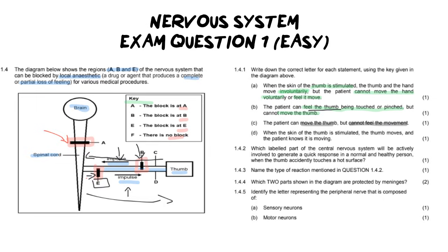Then our final one for this is when the skin of the thumb is stimulated, the thumb is going to move and the patient knows it's moving. I quite like this particular question because what it means is that you are thinking about moving it, which means it's a voluntary thing. And this one's going to be F because there's no blockage.